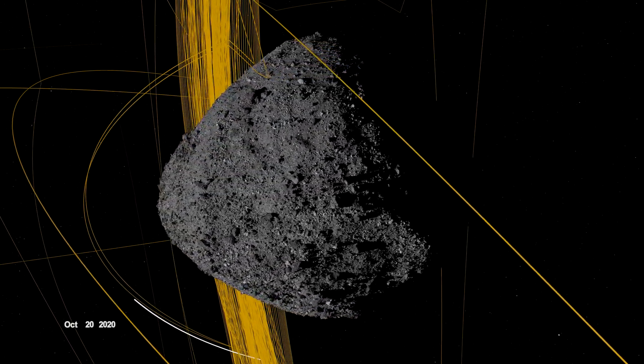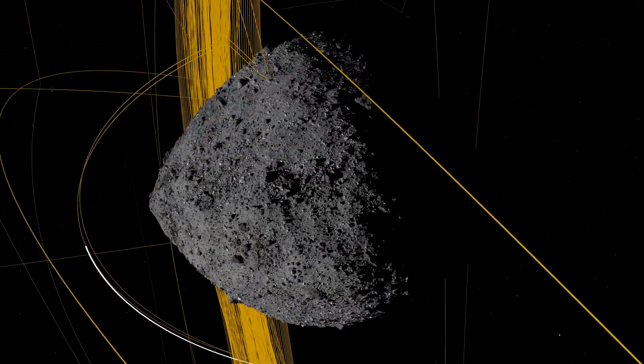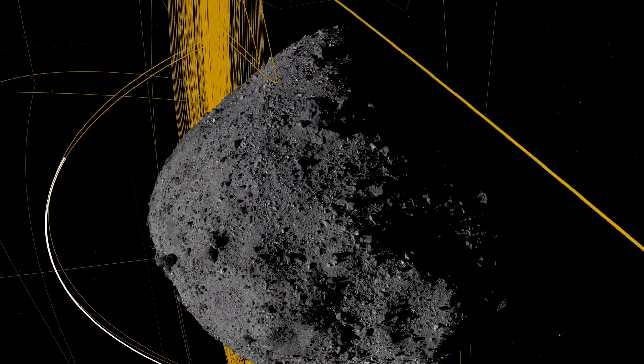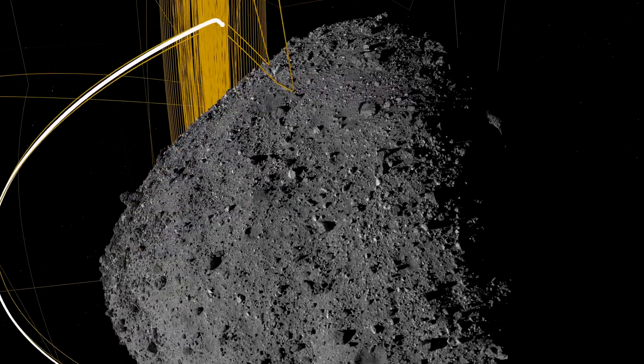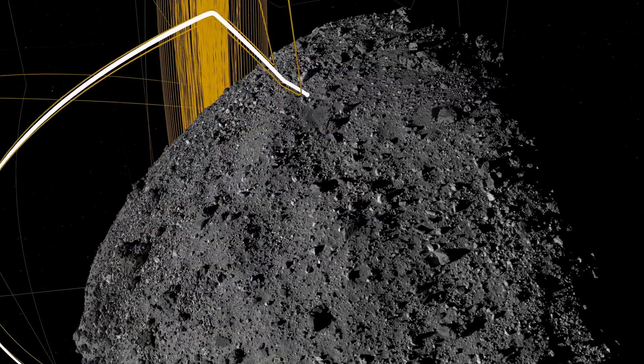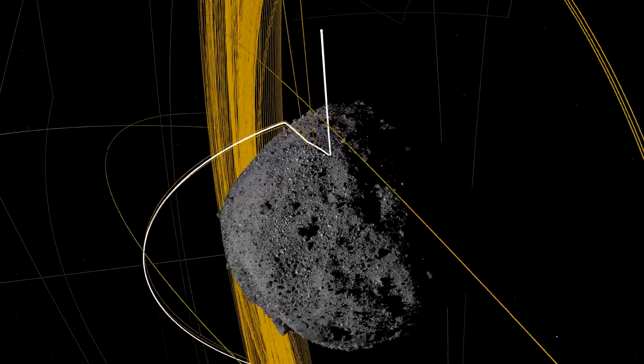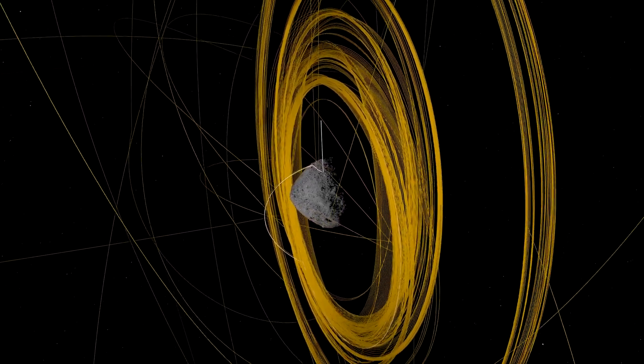A few hours before, mission controllers on Earth had sent the commands for the Touch and Go Sample Collection Maneuver, or TAG. As they watched with anticipation, OSIRIS-REx steered itself to sample site Nightingale, maneuvering toward the small crater at the walking pace of a spider. At 4:11 p.m., the mission received confirmation. OSIRIS-REx had touched down and collected its sample.